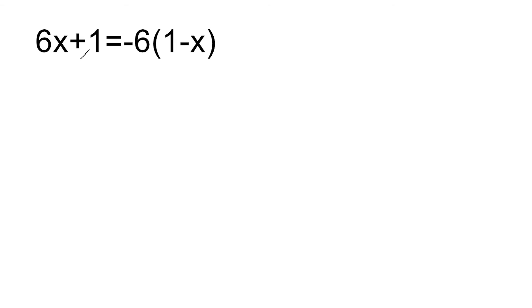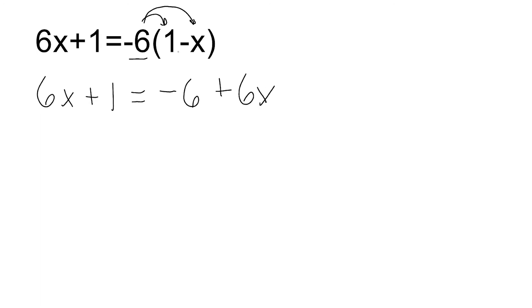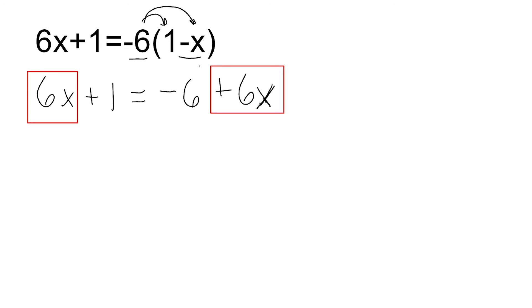Let's go ahead and do another example. On the left-hand side of this equation, there is nothing that we can simplify, so we just rewrite the left side. But on the right-hand side, we can distribute this negative 6 to everything inside the parentheses. So we do negative 6 times positive 1, which is negative 6. And negative 6 times negative x, which is positive 6x — we cannot forget that a negative times a negative always produces a positive. What we want to notice is that the terms with coefficients on either side are identical: we have a positive 6x on both sides.